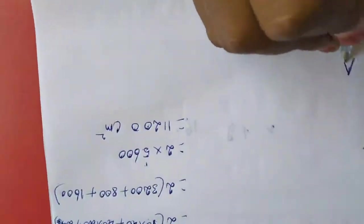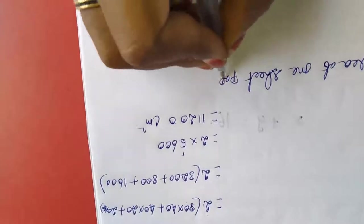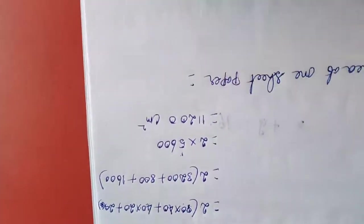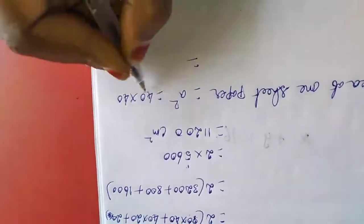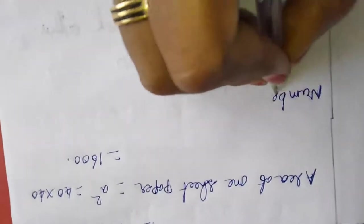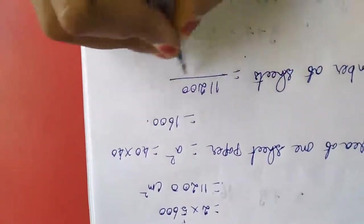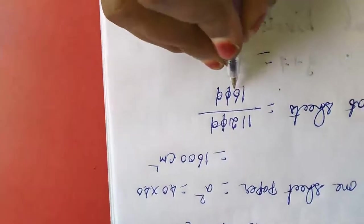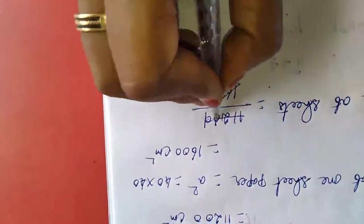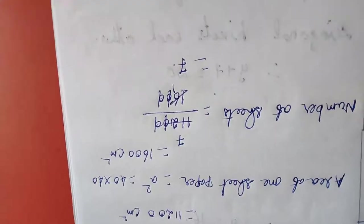Next, area of one sheet of paper. The shape is square, so area is A square, which is 40 into 40, equals 1600. Number of sheets required equals 11200 divided by 1600. Canceling the double zeros and dividing by 16 table: 1 times 16 is 16, 7 times 16 is 112. So she requires 7 sheets.